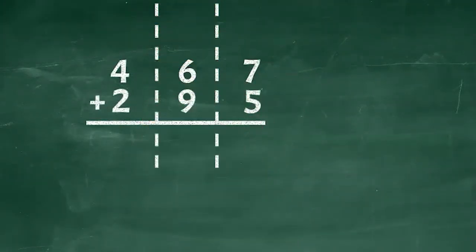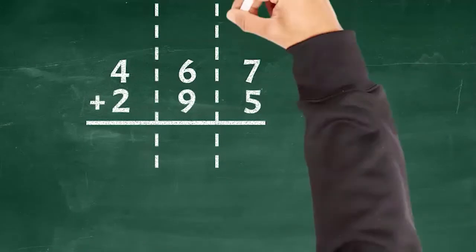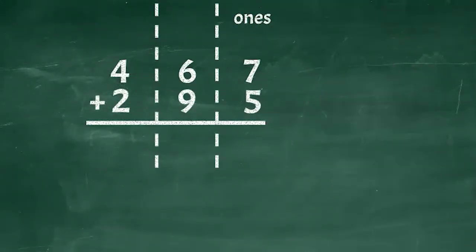What exactly do you mean by lining up the place values? Good question. I like to stack the numbers I'm adding on top of each other. Then I make sure the ones place on the top number is right above the ones place in the bottom number.